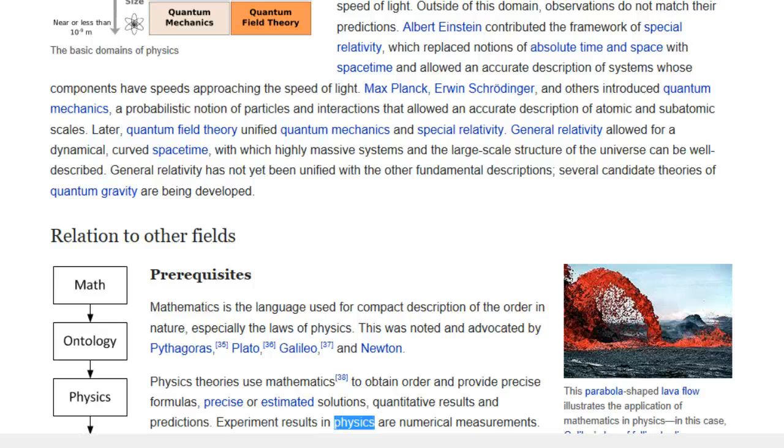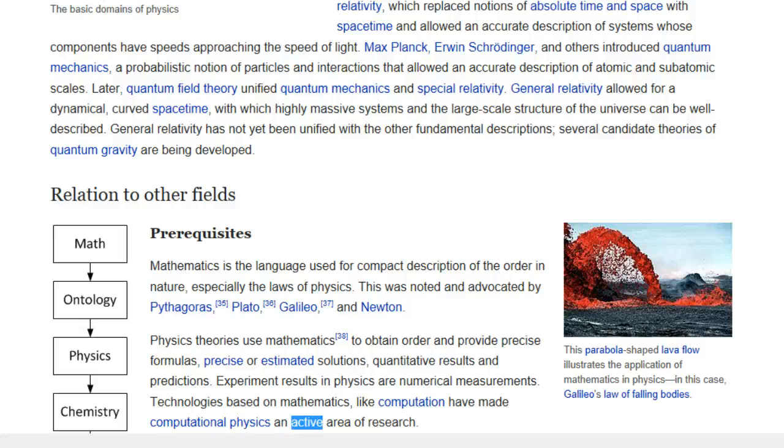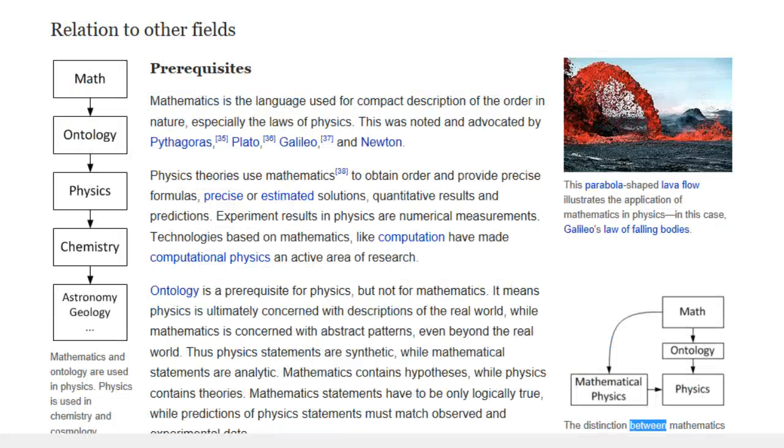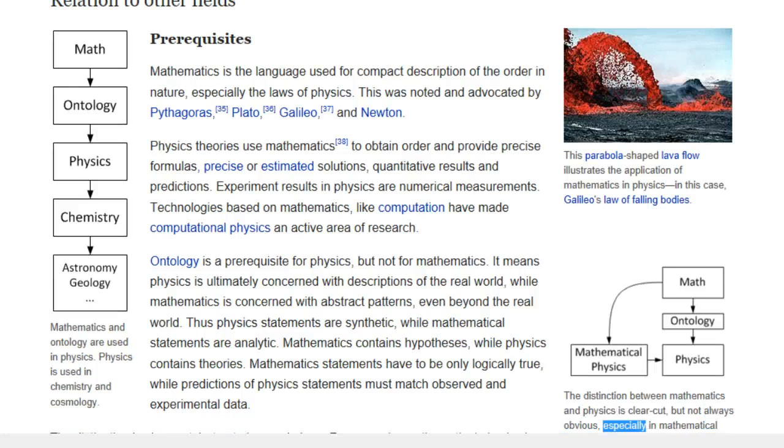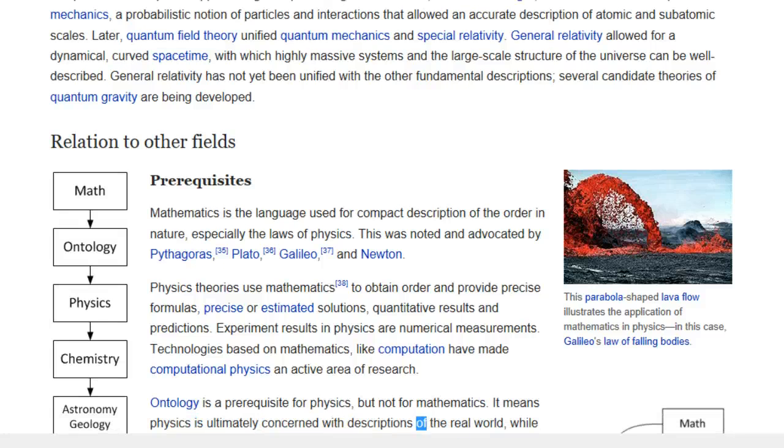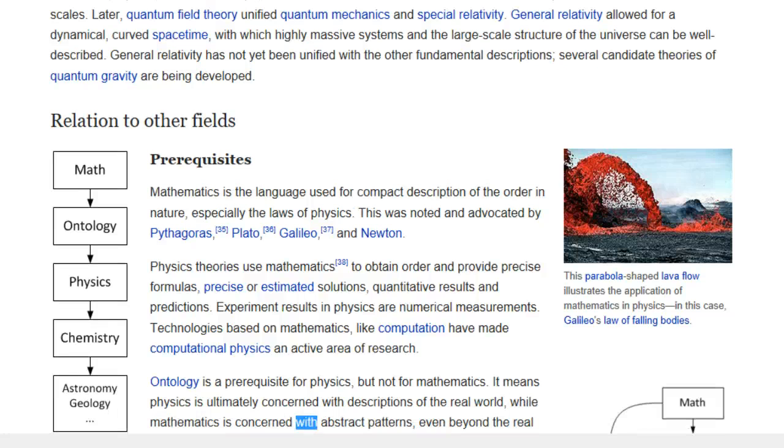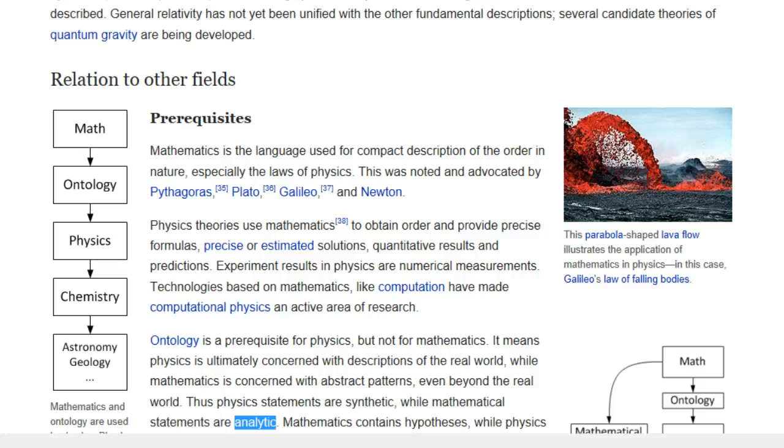Experiment results in physics are numerical measurements. Technologies based on mathematics, like computation have made computational physics an active area of research. The distinction between mathematics and physics is clear-cut, but not always obvious, especially in mathematical physics. Ontology is a prerequisite for physics, but not for mathematics. It means physics is ultimately concerned with descriptions of the real world, while mathematics is concerned with abstract patterns, even beyond the real world. Thus physics statements are synthetic, while mathematical statements are analytic.